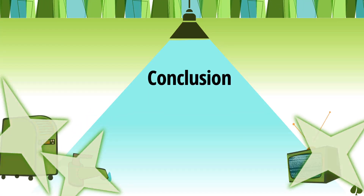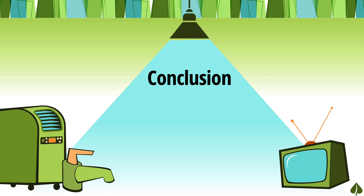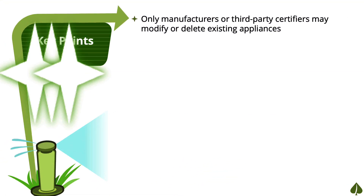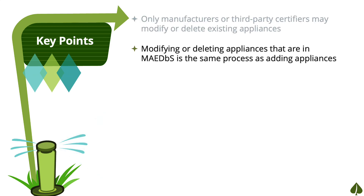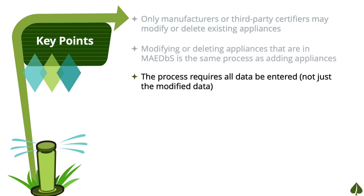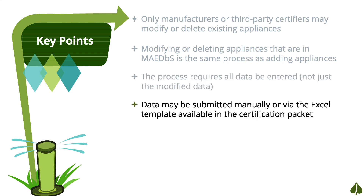Let's go over the key points from this session. Only manufacturers or third-party certifiers can modify or delete existing appliances. The process for modifying and deleting appliances is very similar to the process for adding new appliances; you can refer to our other trainings to learn that process. To modify appliances, all data needs to be entered, not just the data you are modifying. The unchanged data must appear exactly as it is in the MABES. You can modify or delete appliances either manually or through an Excel upload.